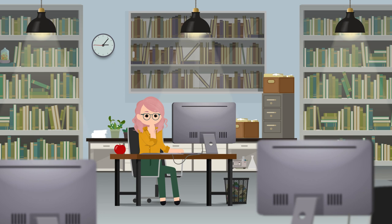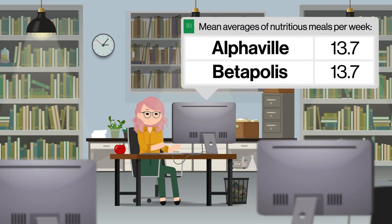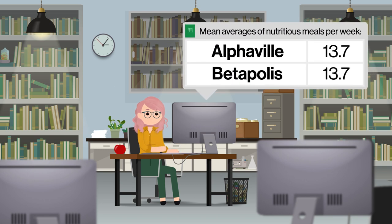At first, she figures it'll be helpful to get an idea of the average mean number for Alphaville and Betaopolis using her spreadsheet. Turns out the mean number of nutritious meals per week are really similar for each city — roughly 14 in both Alphaville and Betaopolis.